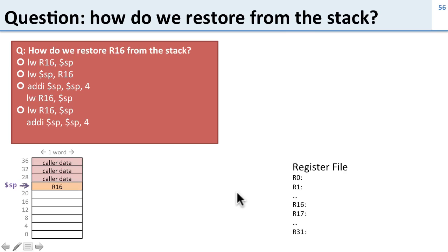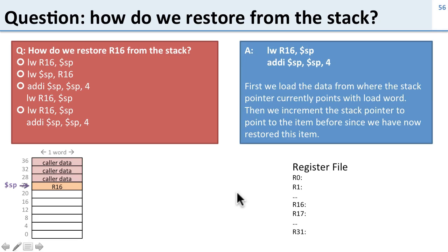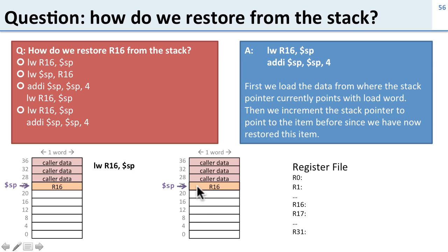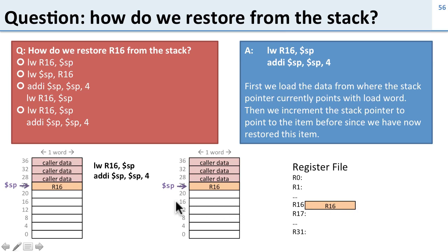How do we restore R16 from the stack? This is the inverse operation. We load R16 from where the stack pointer is pointing, and then add four to the stack pointer to put it back where it was before. Here's our load word instruction with the stack pointer pointing at R16 — we load it into register 16, restoring the saved value, and then add four to the stack pointer to move it back up to where it was before.